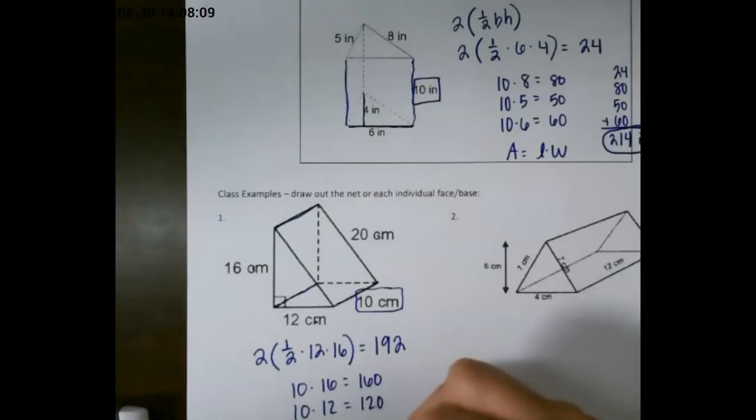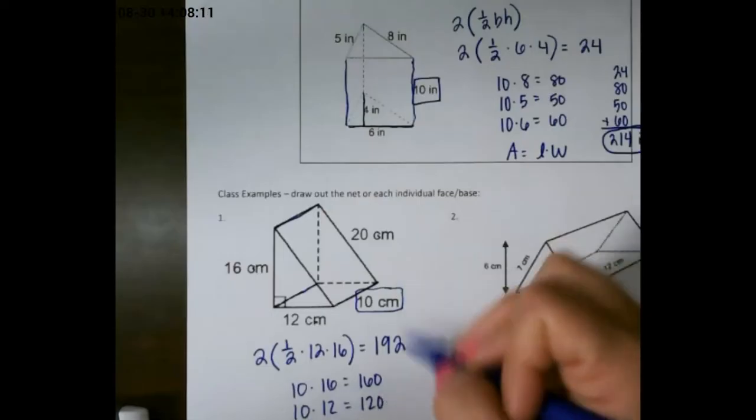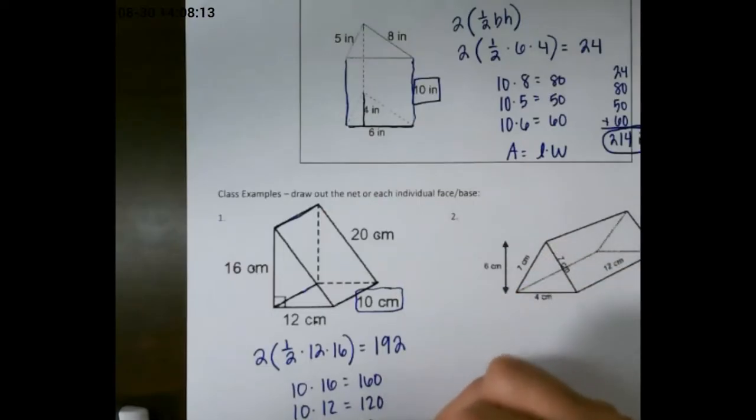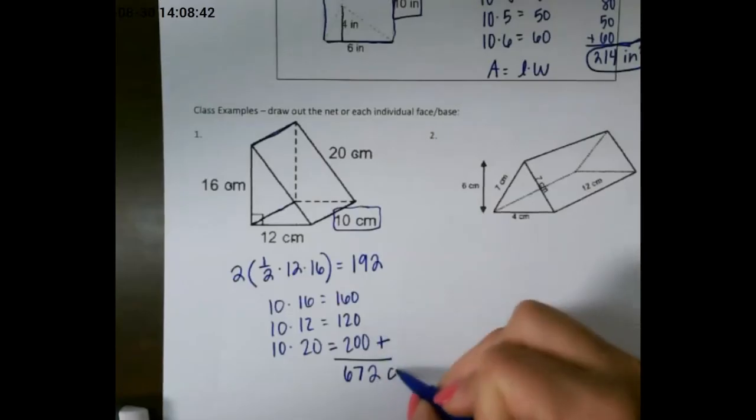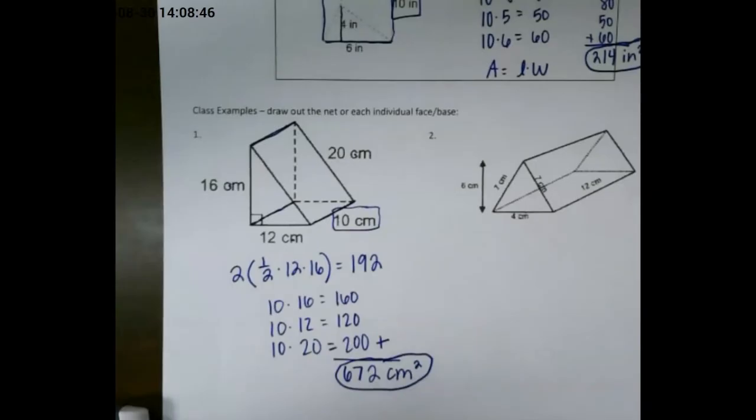Once you find all three faces of the rectangles, as well as the triangles, you add all of those numbers up to get your total surface area. And when we add those up, we get 672 centimeters squared as our final answer.